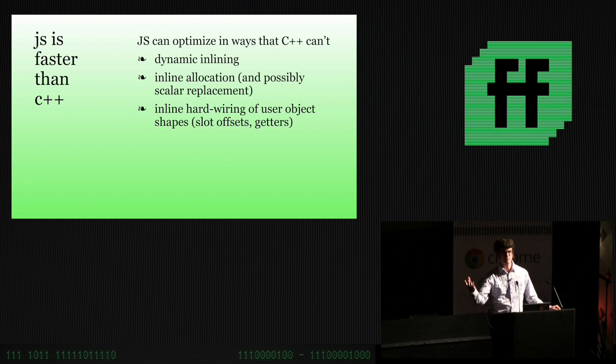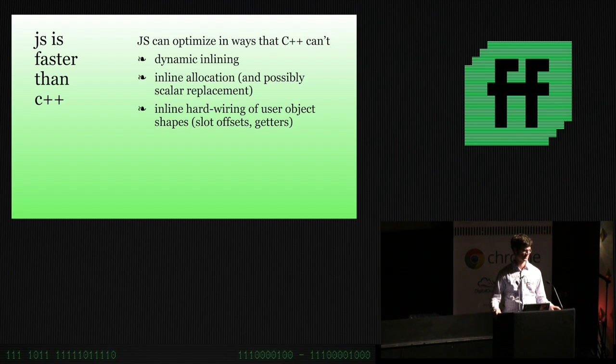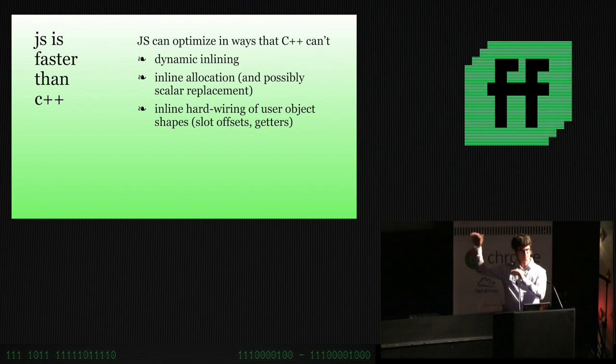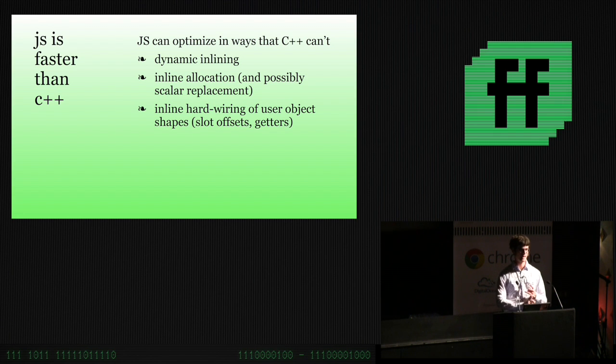The function that you're foreaching on, the function that you're mapping on, gets inlined directly, or can get if it's important enough, into the sites where it's used. This is a trick that's available in JavaScript, not available in C++. Inline appears here all the time, and that's the big thing happening in JavaScript. We can inline allocations.